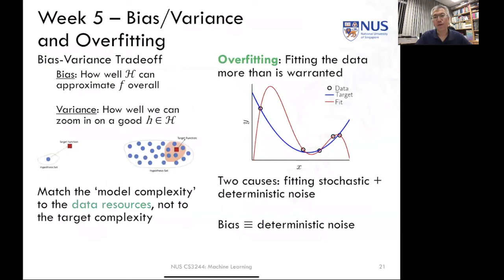In week 5, our final week before the midterm, we covered bias variance and overfitting, one of the key parts of machine learning theory. Here we covered the bias variance trade-off and looked at how well the hypothesis space can approximate our overall f. We call this the bias. If our hypothesis set is fairly small and far away from our target function, then the distance between the discrepancy between the hypothesis and the target function is large. We call this bias error.